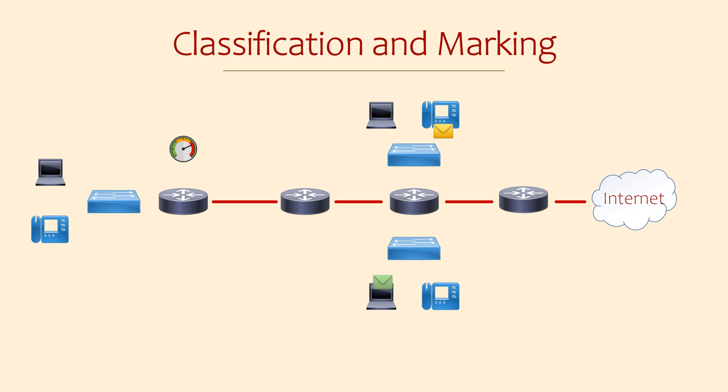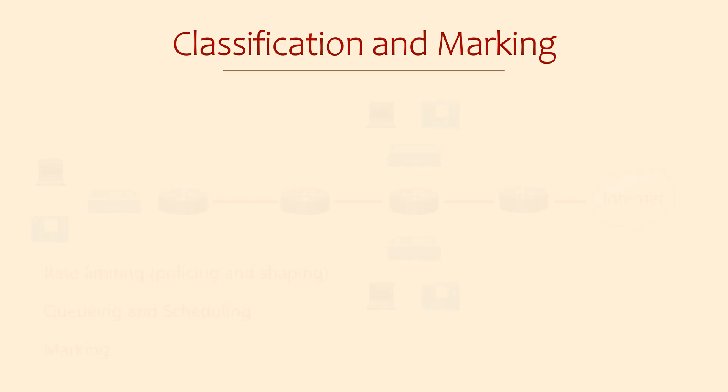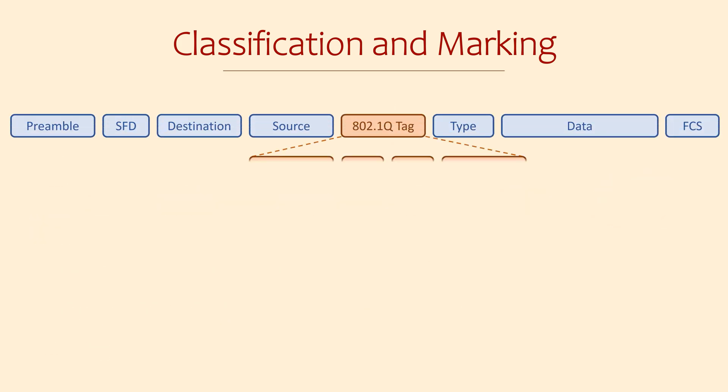There are various actions that QoS can take. These include rate-limiting traffic, queuing and scheduling packets, and marking the packets. We're going to look at all these actions. We'll start with marking packets. Before a device sends a packet out, it can add a marking in the Ethernet or IP header. This marking is a value that identifies that traffic's class.